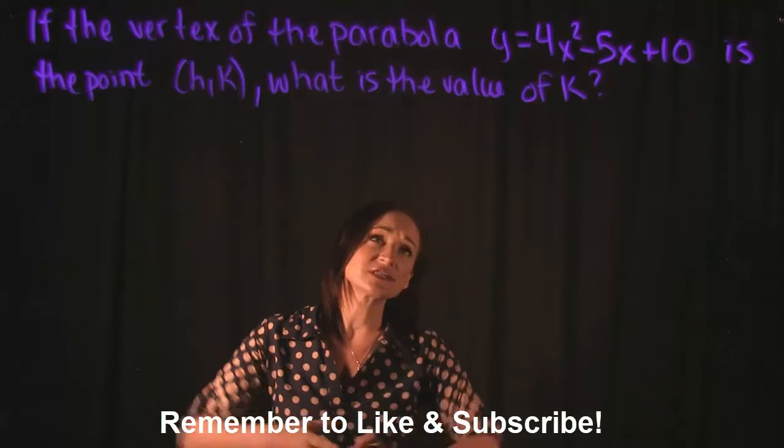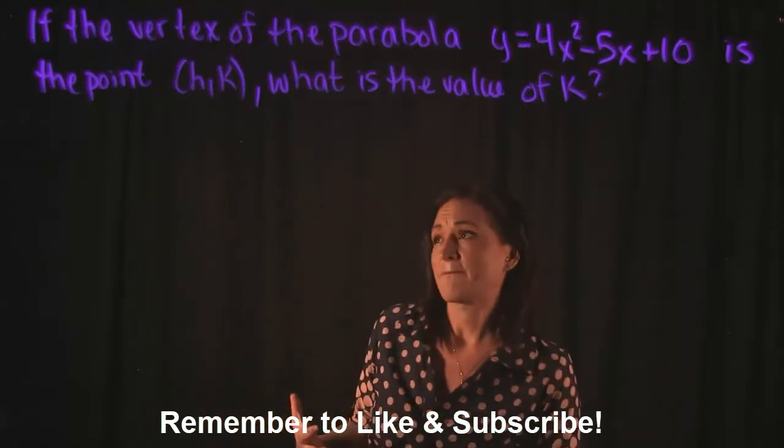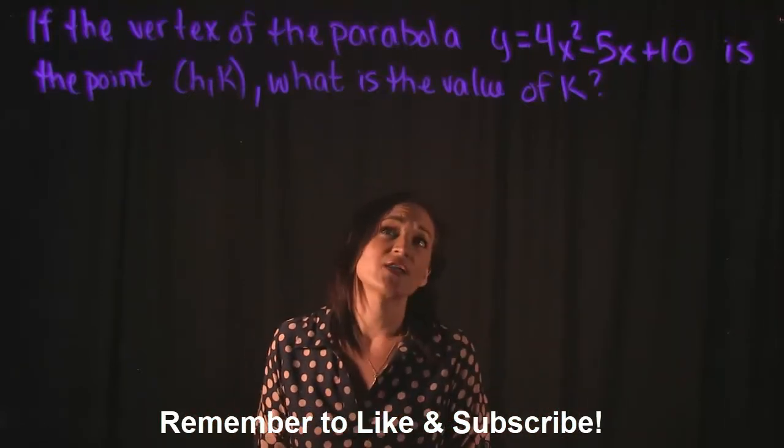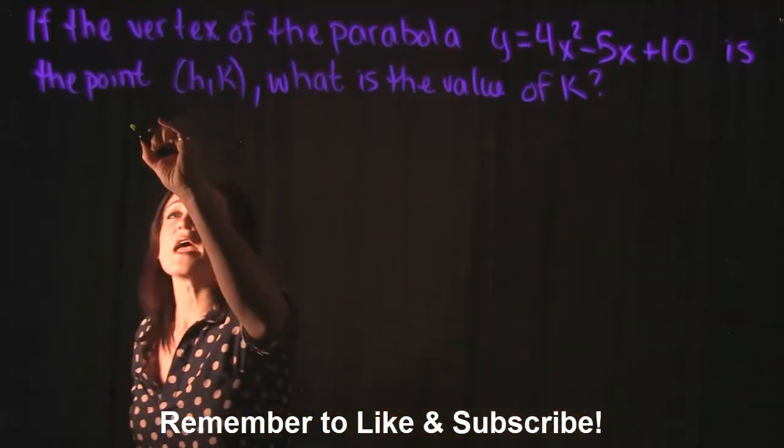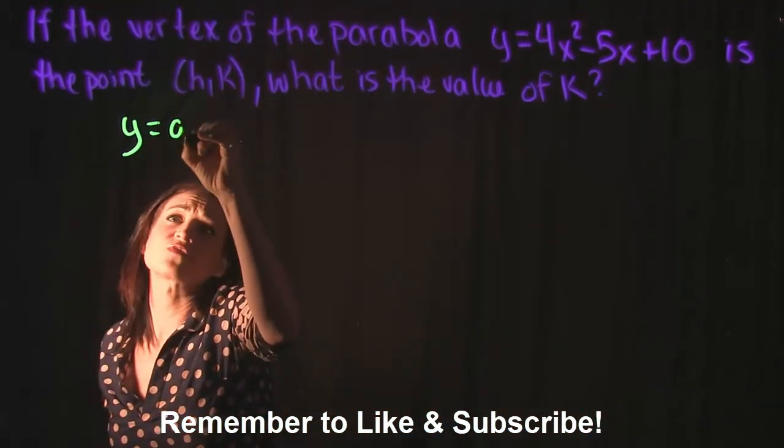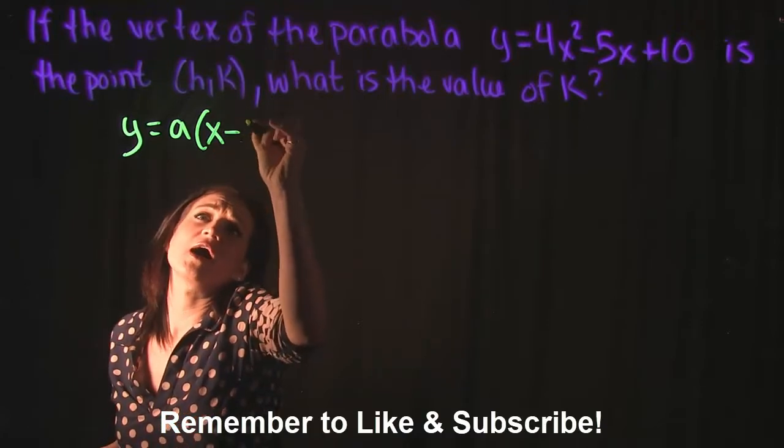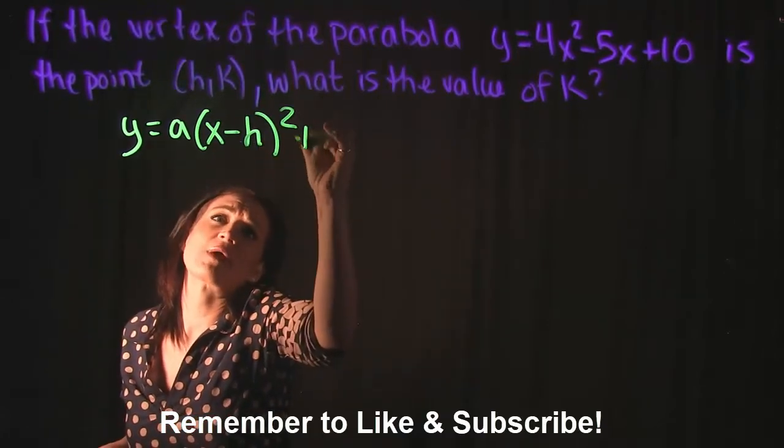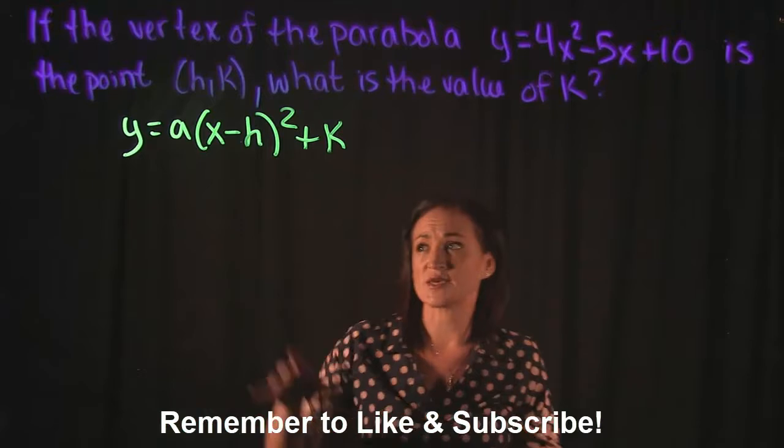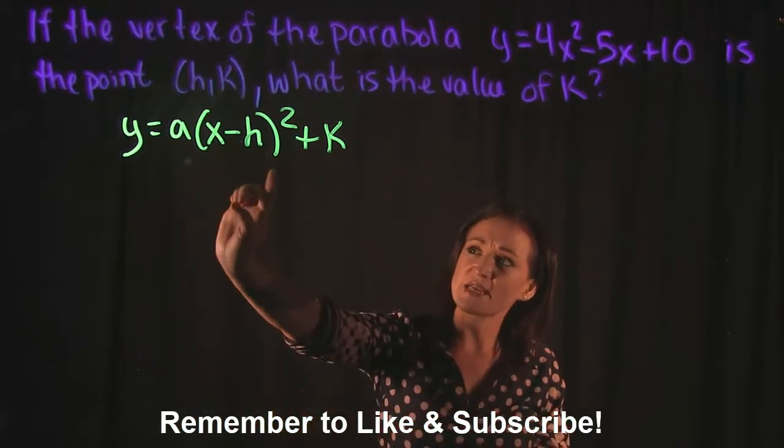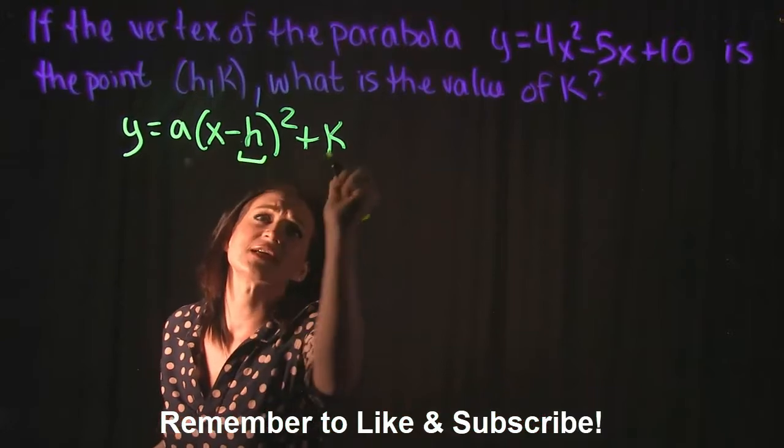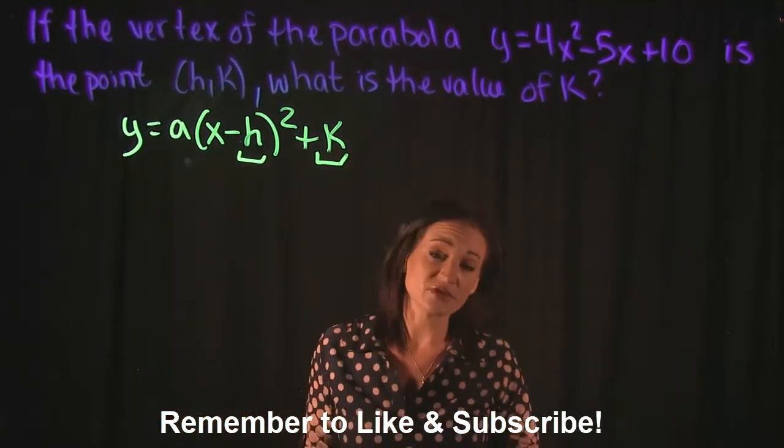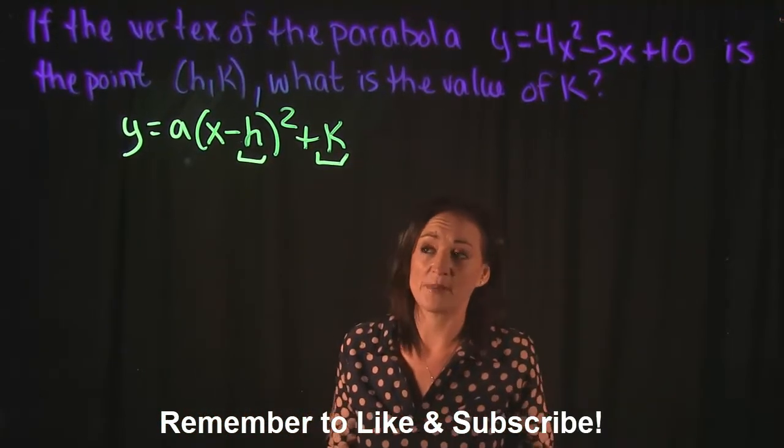They gave us the equation for a parabola, and the vertex of a parabola is known to be (h,k). That comes from the standard form of a parabola, which looks like this: y = a(x - h)² + k, where the values h,k represent the vertex of the parabola.